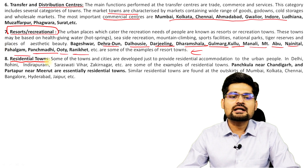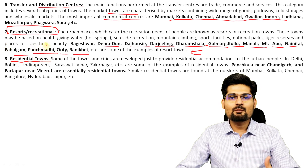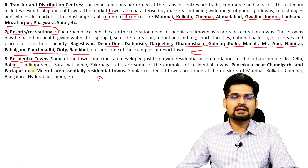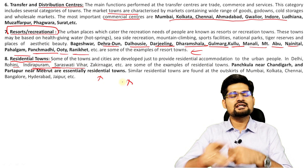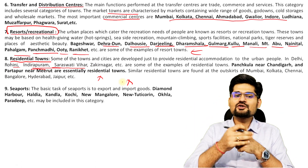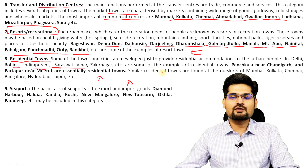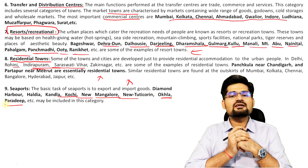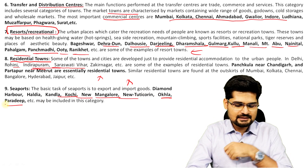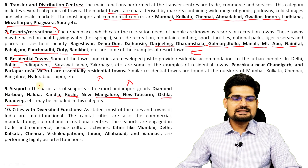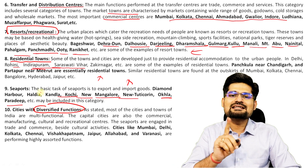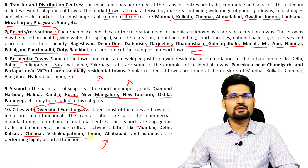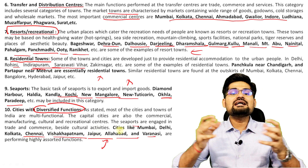The eighth category is residential towns, known for residential buildings and complexes. Examples include Panchkula near Chandigarh, and near Delhi — Rohini, Indirapuram, Sravasti Vihar, and several new townships. The ninth category is seaport towns, famous for their ports: Diamond Harbour, Haldia, Kandla, Kochi, New Mangalore, Tuticorin, and Paradip. The tenth category is cities with diverse functions — not known for any single function but a variety of functions. These are usually bigger cities like Mumbai, Delhi, Kolkata, Chennai, Visakhapatnam, Jaipur, Allahabad, and Varanasi.